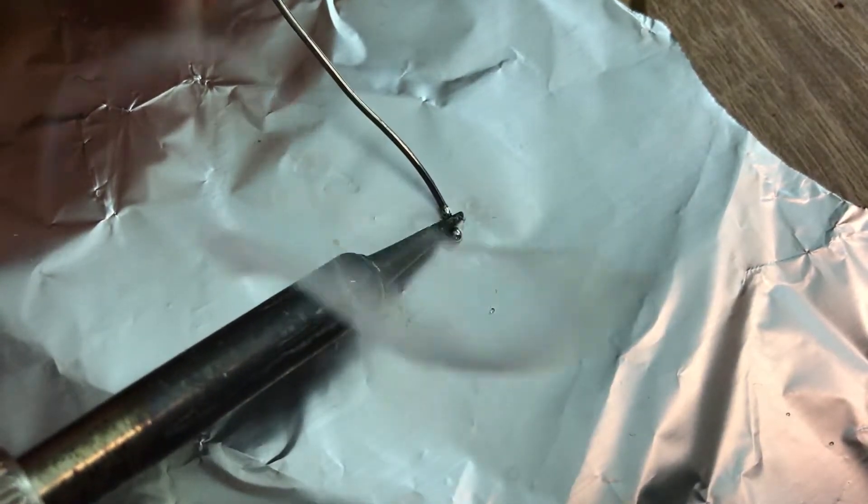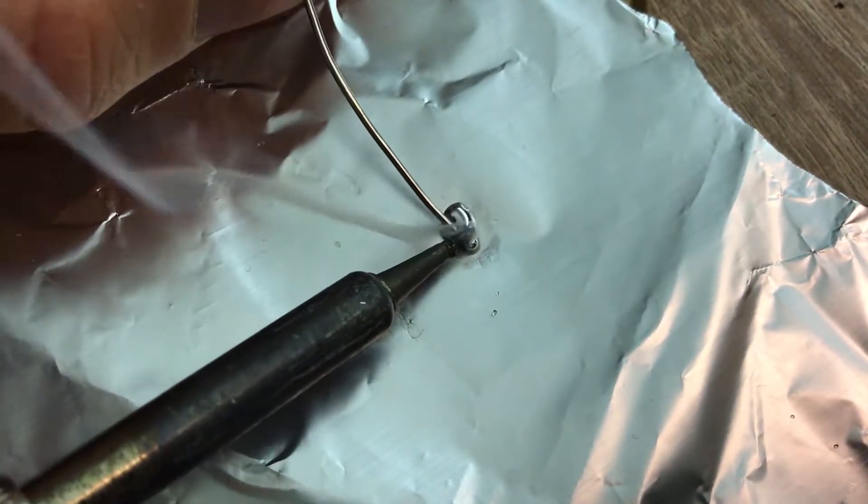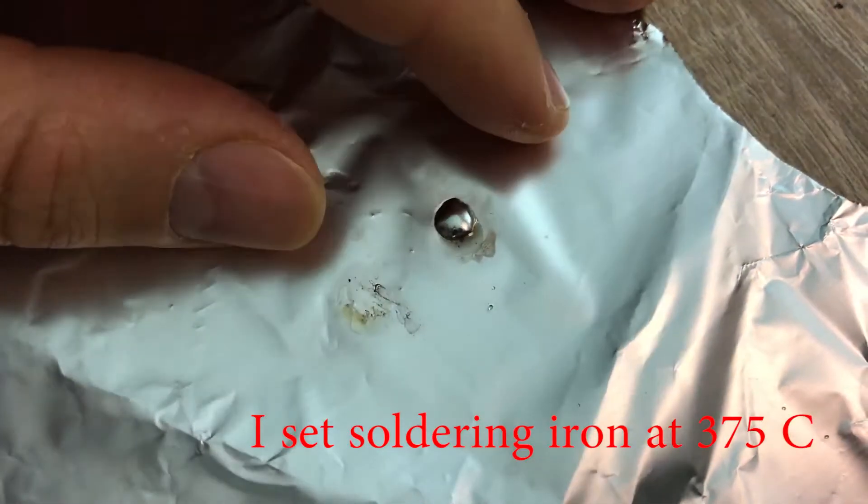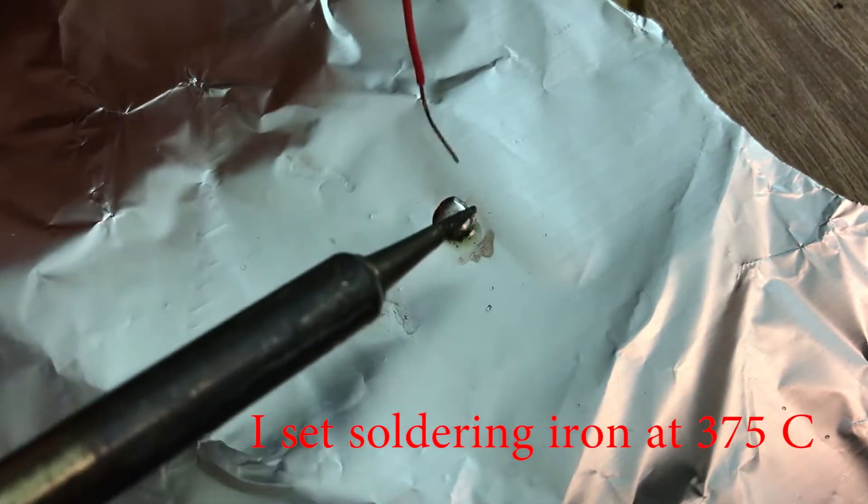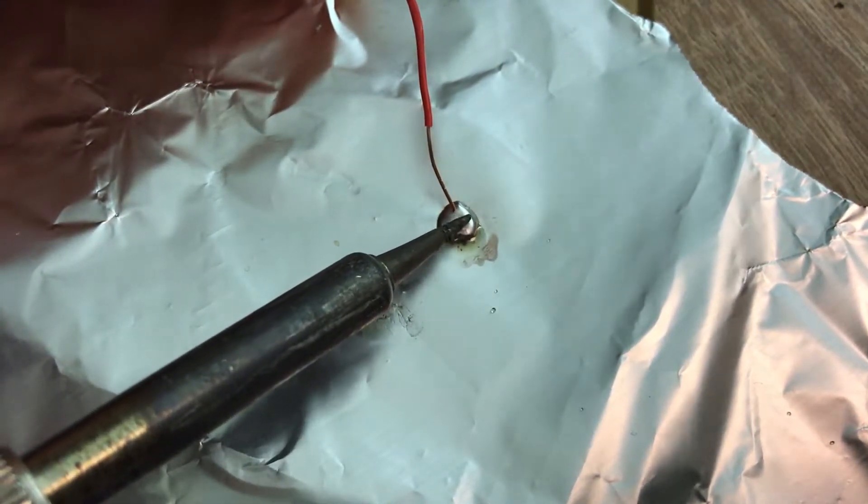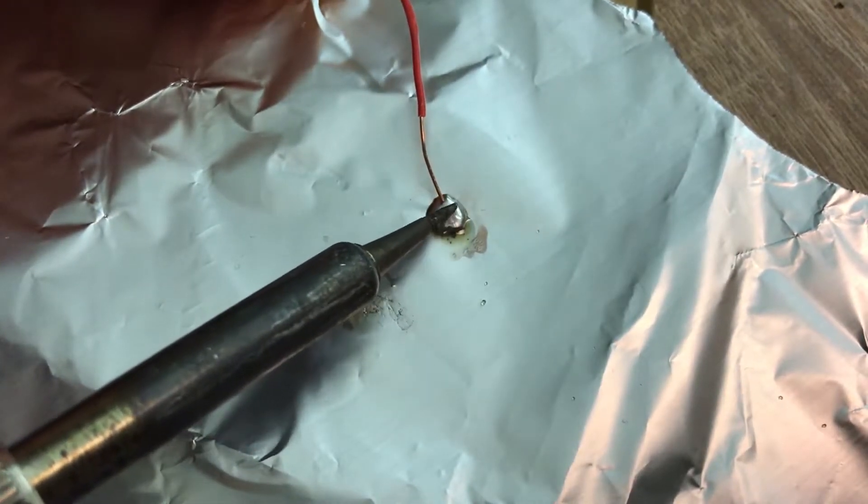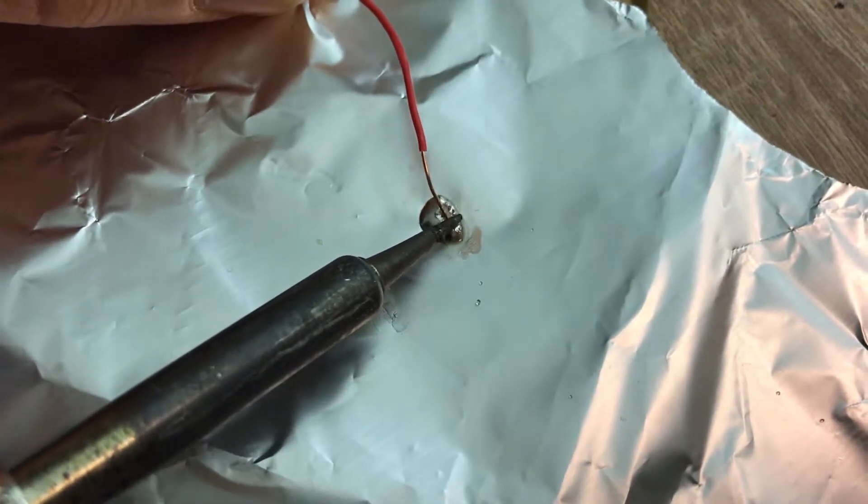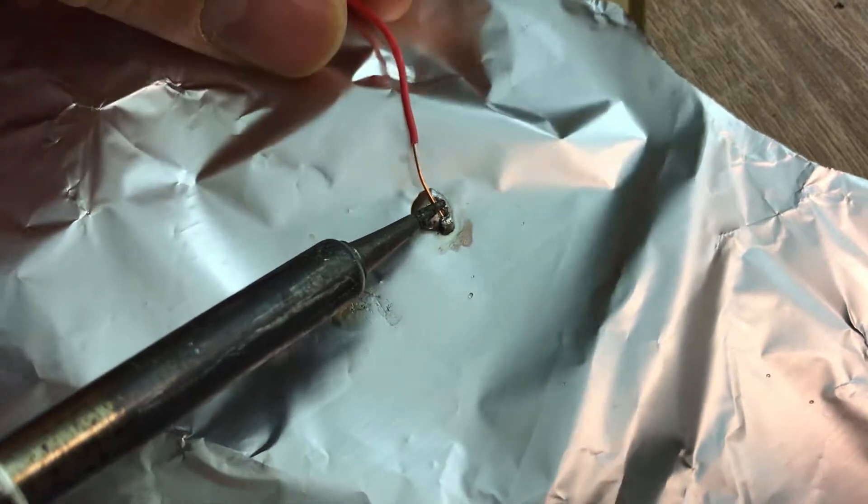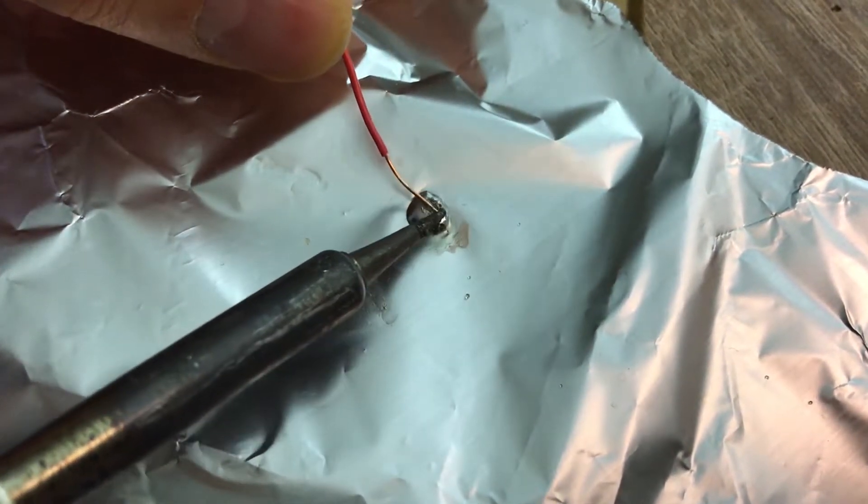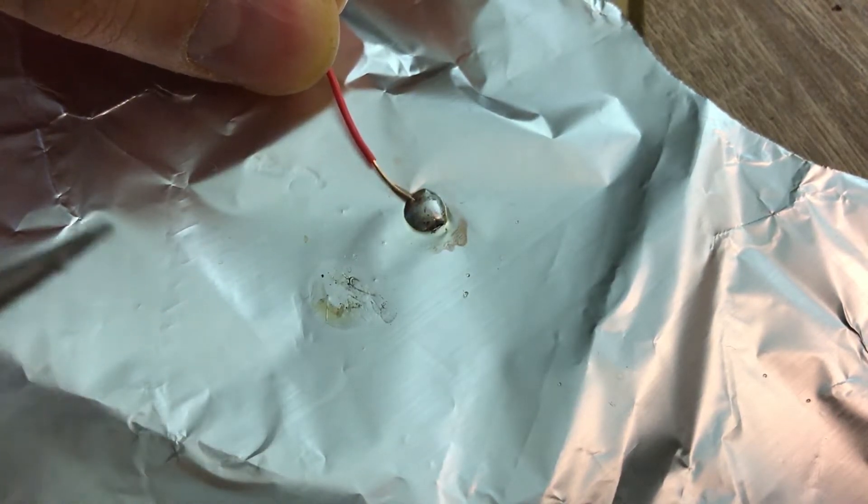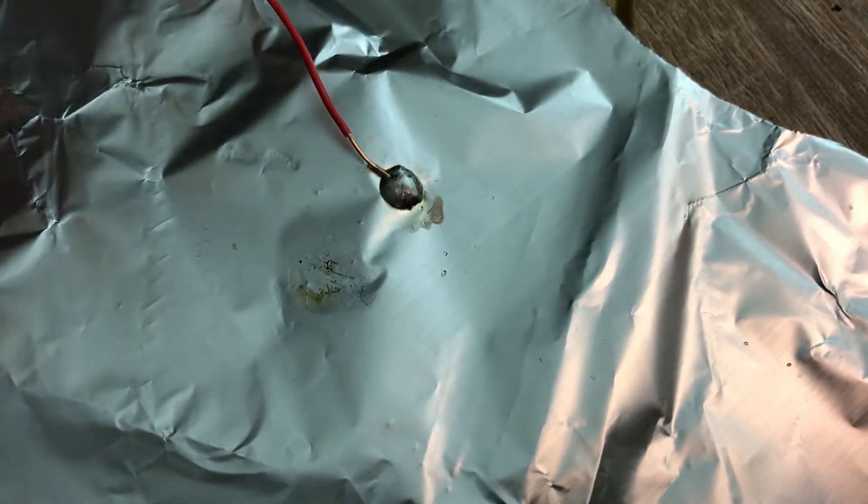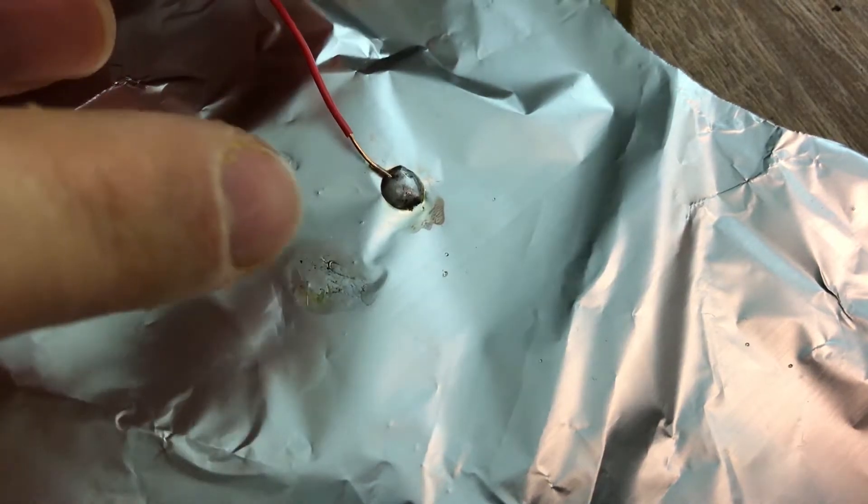Now if you use solder, what you observe is that solder perfectly attaches to the aluminum. And now I use a piece of copper wire to attach my copper wire to the solder. Oh my, it works so perfectly. You see that now this is completely connected.